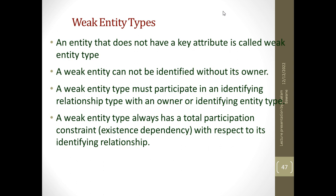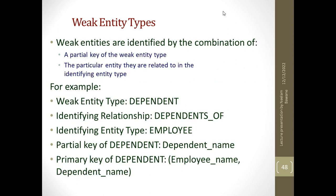The weak entity will always have a total participation with respect to the relationship. For example, an employee has a list of dependents and there are dependent names. The weak entity will have a partial key — something used to vaguely identify it — and it will also have the strong entity set's key. Put together, they will become the primary key.